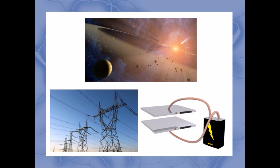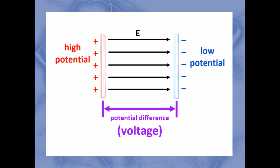If electrons didn't move the opposite way to protons, the universe as we know it could not exist. Atoms would collapse in on themselves, life would never arise, and you would not have a school to go to. So let's be grateful for voltage and take some time to understand it better. The following exercises will test your knowledge of electrical concepts and give you a chance to think about the fundamental nature of charged particles.